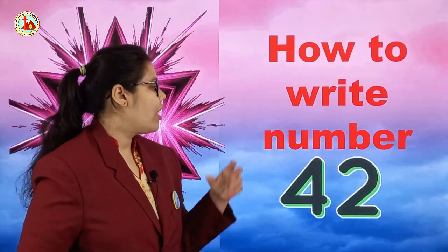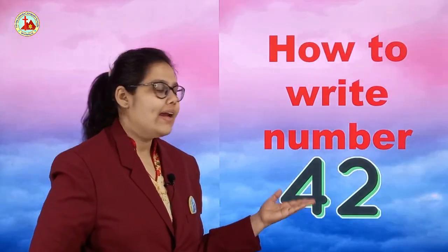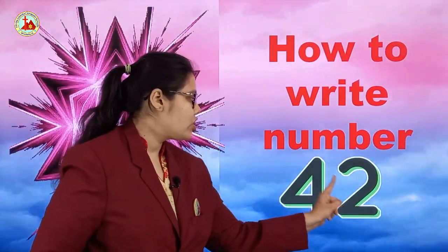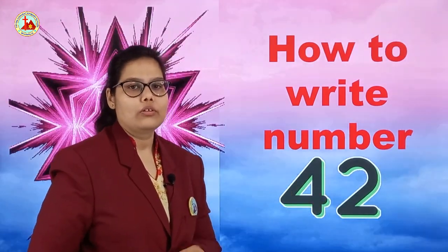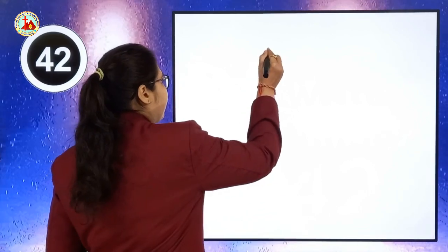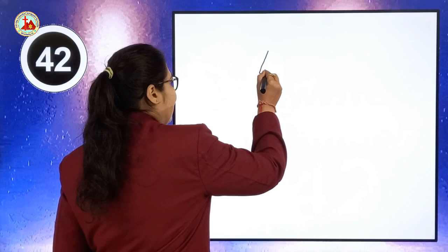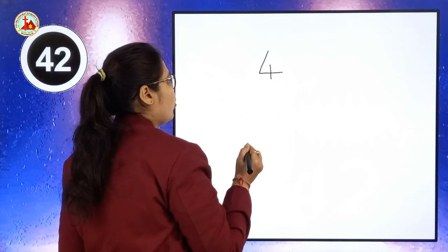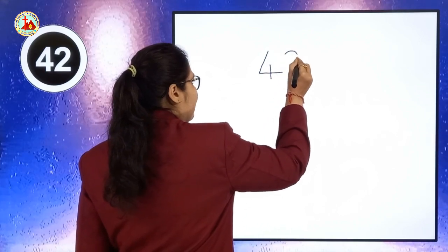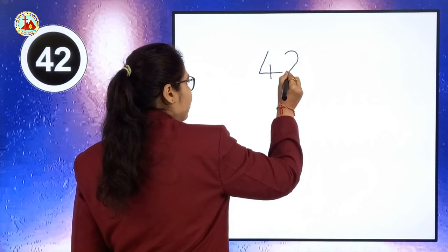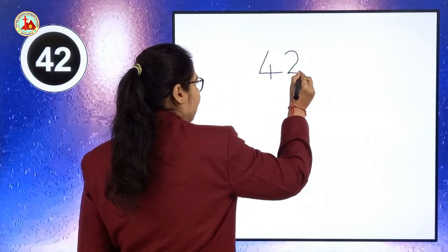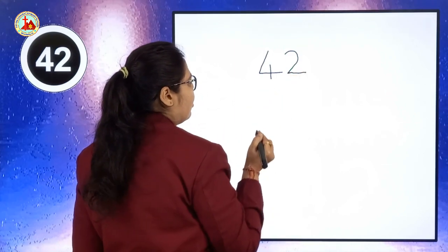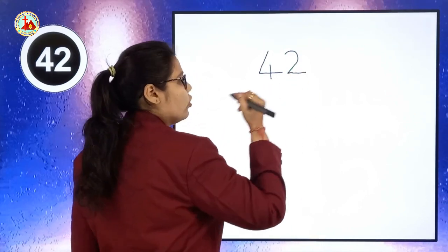So now we are going to learn how to write number 42. 42, 42. For writing number 42, first we have to write number 4. Slanting line, sleeping line, standing line makes number 4. Then we have to write number 2. First make a curve, then continuously go down and then sleeping line. 42.